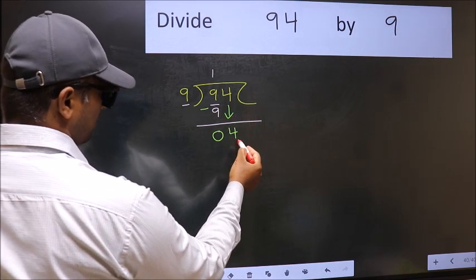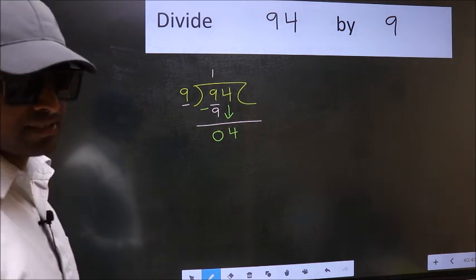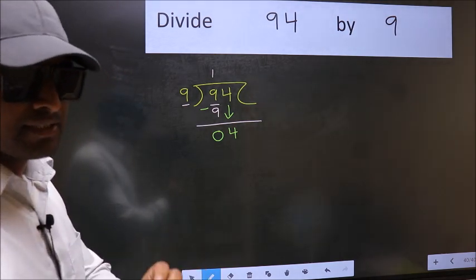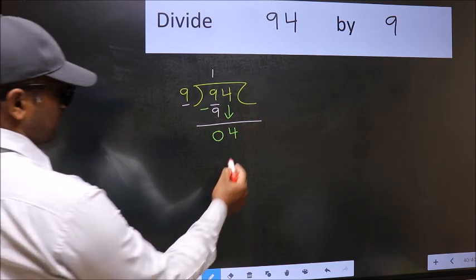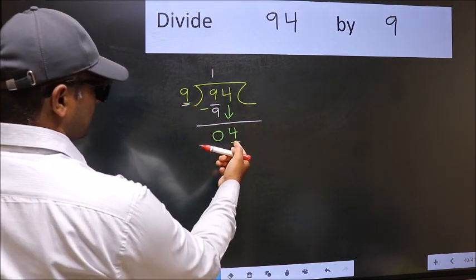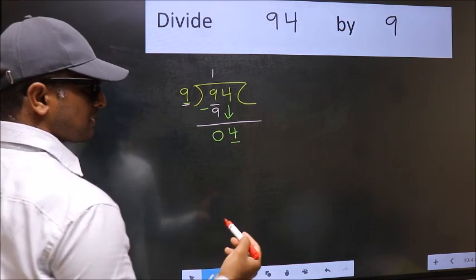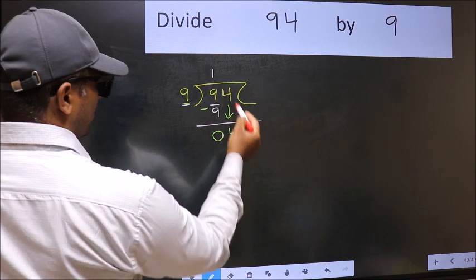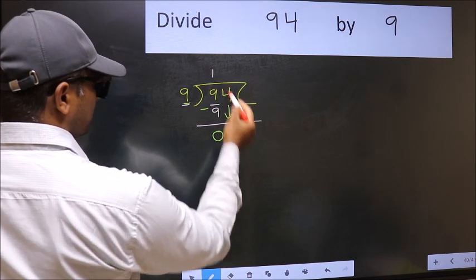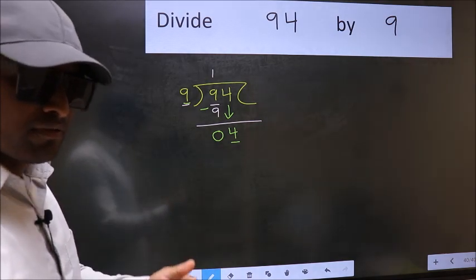After this step, the mistake happens. And the mistake is this. Here we have 4 and here 9. 4 is smaller than 9. So what many do is they directly put dot and take 0 which is wrong. Why is it wrong?